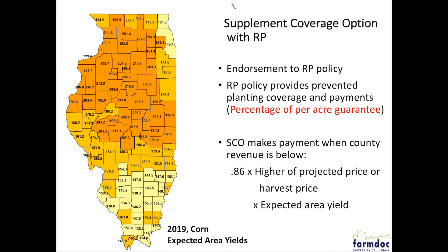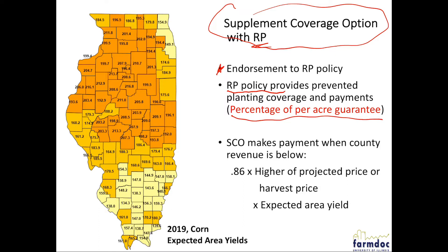I'm going to do supplemental coverage with RP. You can obviously get supplemental coverage with YP or RP with Harvest Price Exclusion. We're going to do this with RP because that's what most people get — it is an endorsement to the RP policy. The RP policy will provide the preventive planning coverage and payments. As we lower the coverage level, we lower the per acre guarantee and, as a result, we lower the potential preventive planning payment.